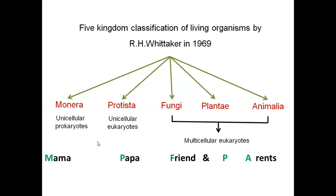This is your five-kingdom classification, given by R.H. Whittaker in 1969. In the next class, we will study the details of Monera — the characteristics and types of organisms. We will also study the six-kingdom classification, because the five-kingdom classification also had drawbacks, and the six-kingdom classification had a better phylogenetic analysis. Thank you.